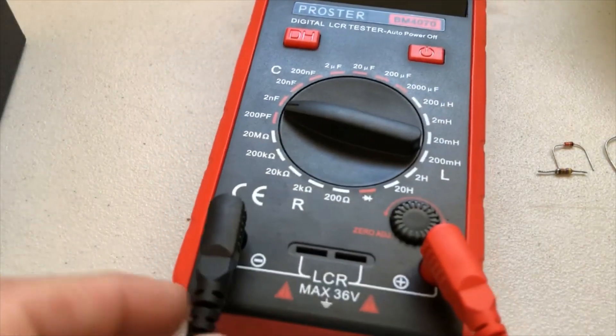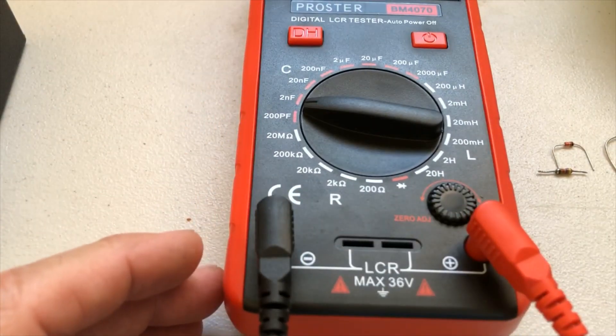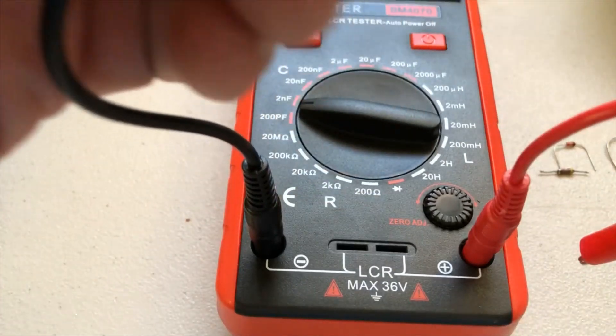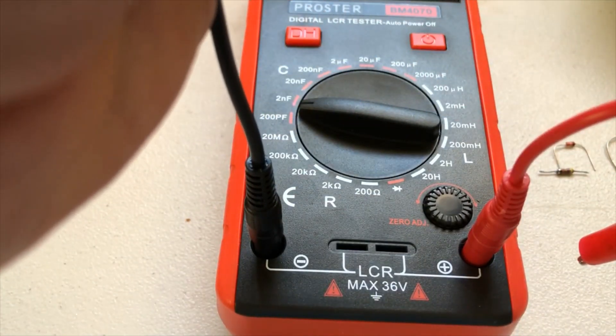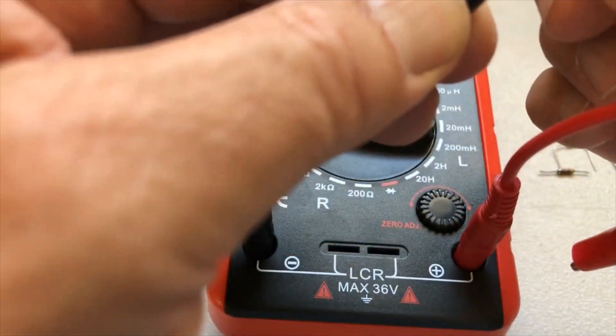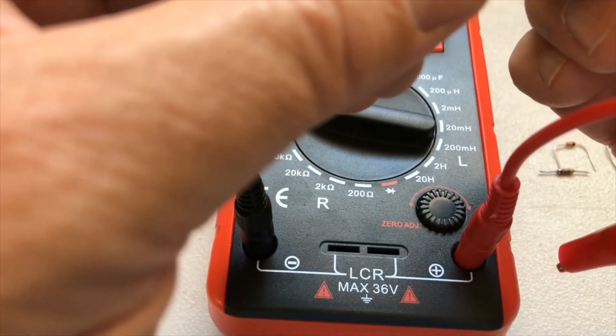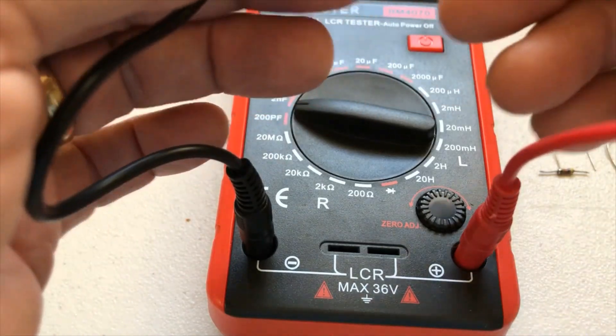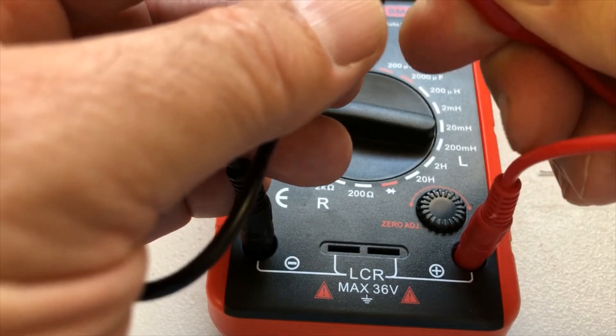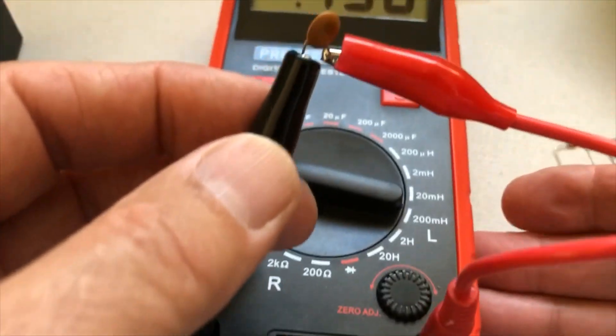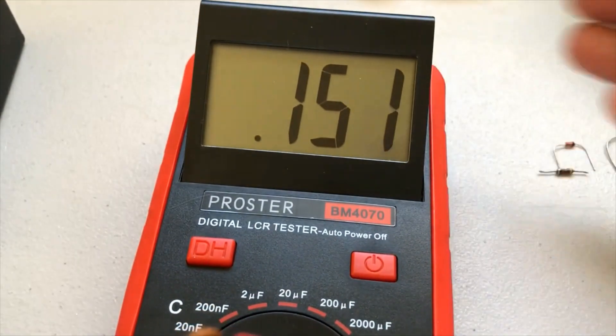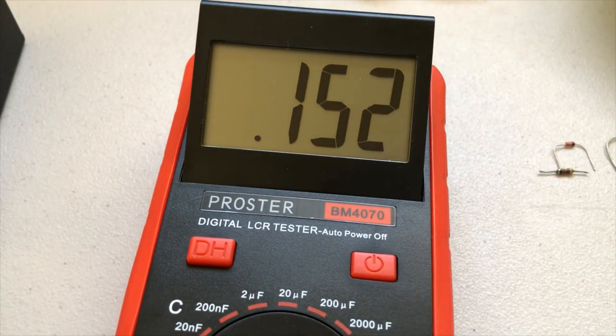We're going to have to change the leads on this also. So I'm going to go ahead and put the leads on here that are alligator clips. And we'll go ahead and clip it on and see what we get. And I said we wanted to get 0.15 nanofarads. And look at that, almost spot on 0.152. So this capacitor is good.